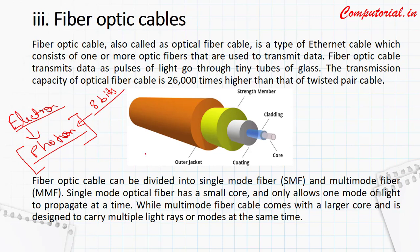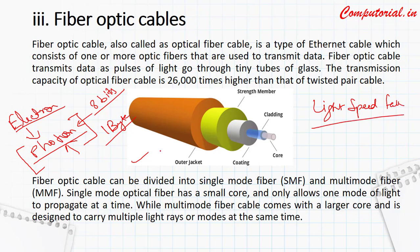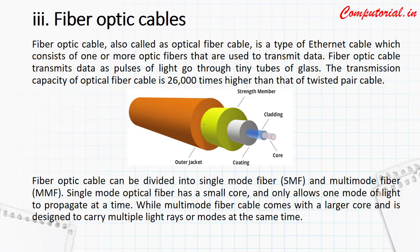A photon can carry one byte of data. This is why fiber optic cables use light particles — photons — which means every time an electron passes through, one byte of data is transferred. We all know that light is the fastest, so in these cables the light medium is used. This is why data travels from one node to another in only seconds, and data transfer is very smooth without any distortion.